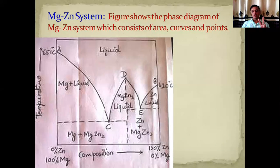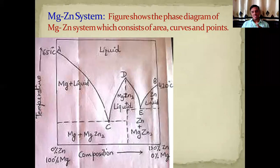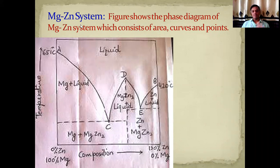On the same concept, two types of questions may be asked. One is: explain the compound formation with congruent melting point with a suitable example. If the question is asked in these words, then you have to explain the same phase diagram. Or the question may be asked another way: explain the phase diagram of magnesium-zinc system. If the question is asked in that way, you have to explain the same system.